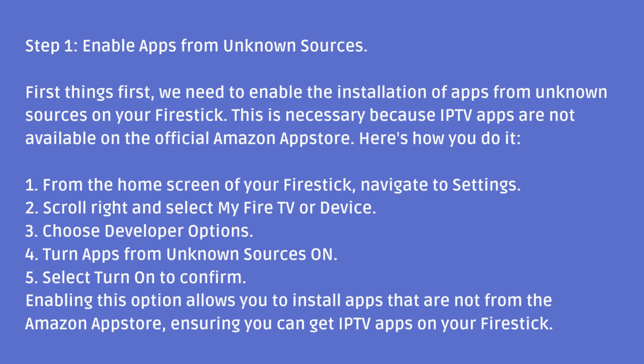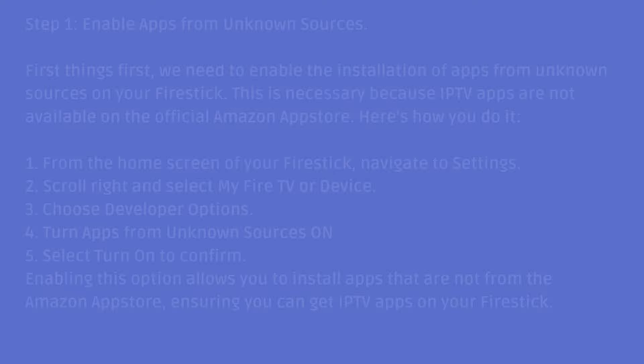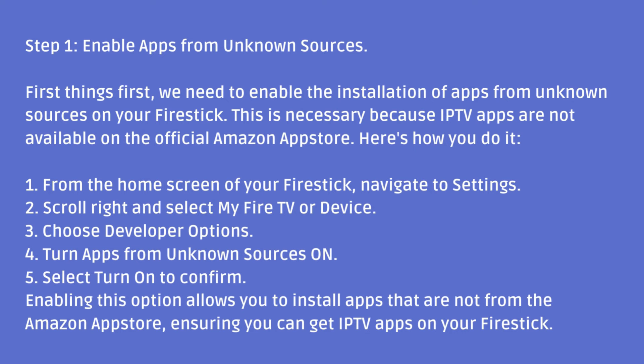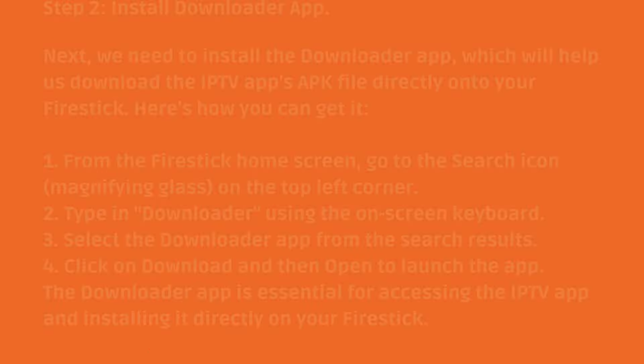From the home screen of your Fire Stick, navigate to Settings. Scroll right and select My Fire TV or Device. Choose Developer Options. Turn Apps from Unknown Sources on, then select Turn On to confirm. Enabling this option allows you to install apps that are not from the Amazon App Store, ensuring you can get IPTV apps on your Fire Stick.